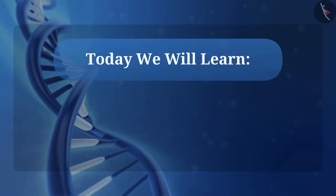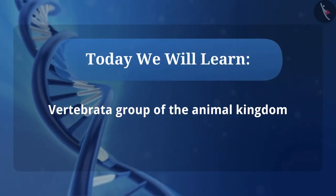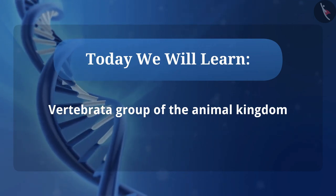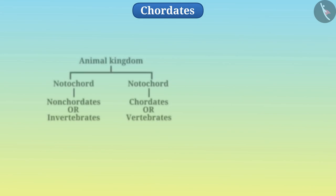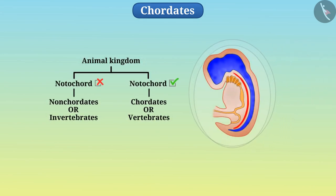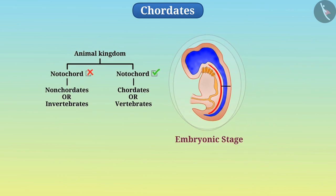Today we will learn about the vertebrata group of the animal kingdom. We know that some organisms have a rod-like structure present at the dorsal side of their body in their embryonic stage or any other stage of life, which is known as notochord or backbone.